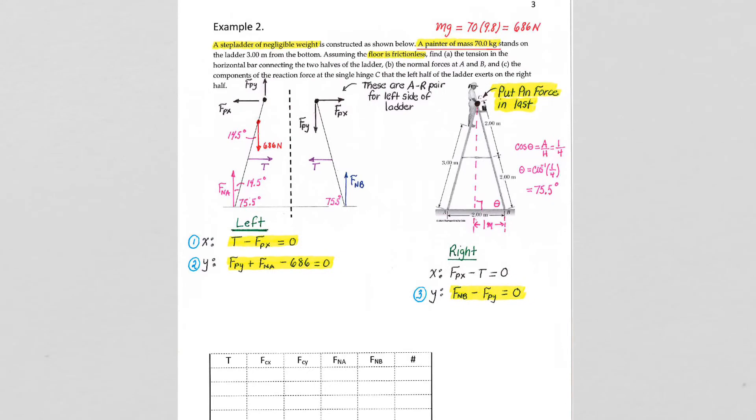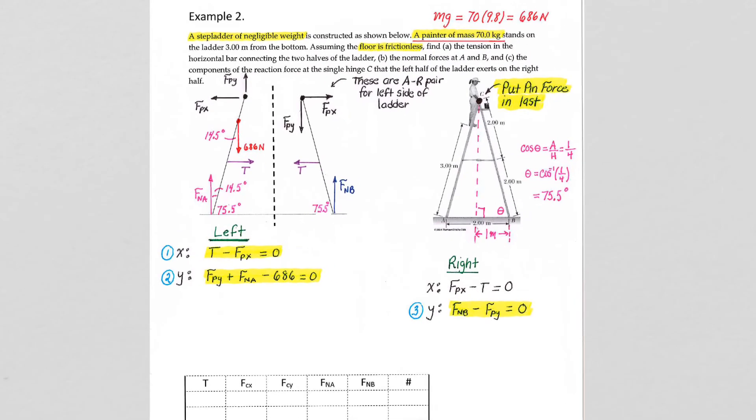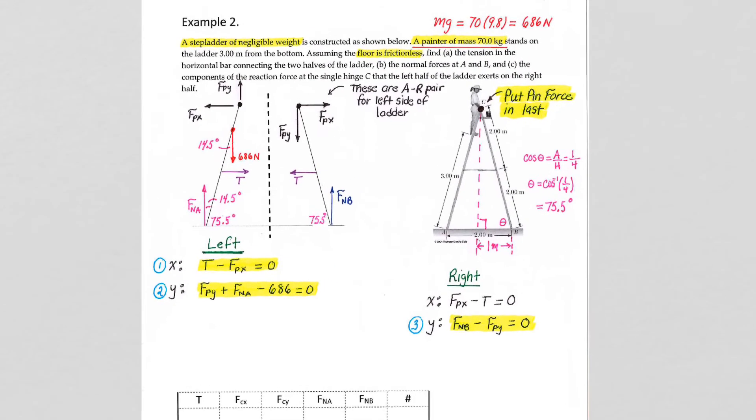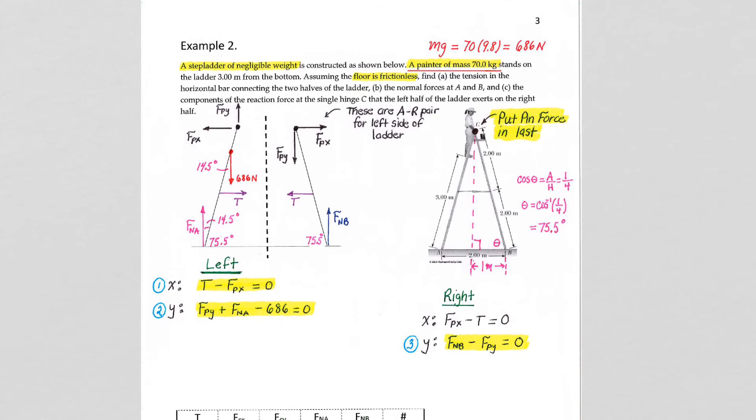All right. So, what we are going to do is first deal with sum of the forces. Only go to sum of the torques if you really need them. So, I'm going to look at sum of the forces in the x direction for the left side of the ladder equals 0. Sum of the forces in the y direction equals 0.